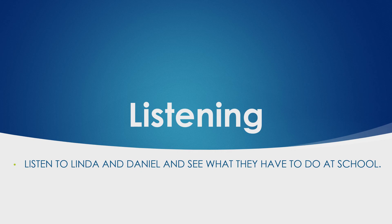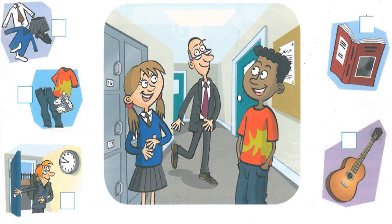Let's see what Linda and Daniel have to do at school. Here they are — Linda on the left, Daniel on the right, and probably a teacher at the back. While you listen to their conversation, you need to tick the boxes for whatever things they have to do. For example, if Daniel has to play a guitar at school, you tick the box with a picture of a guitar. You can see all these pictures under the video. Get ready!